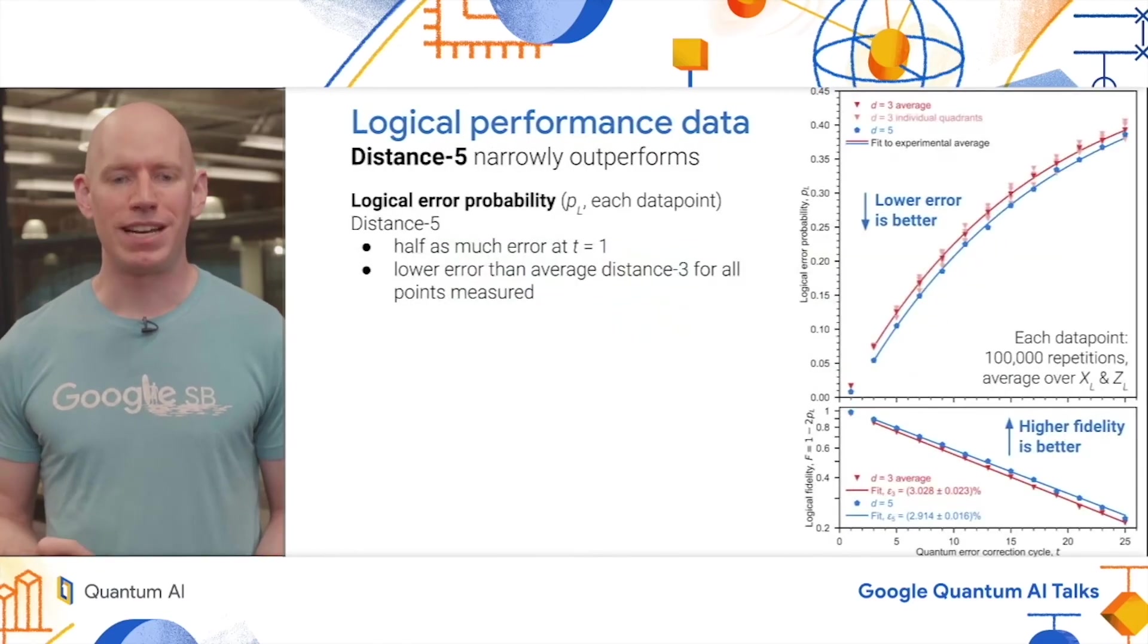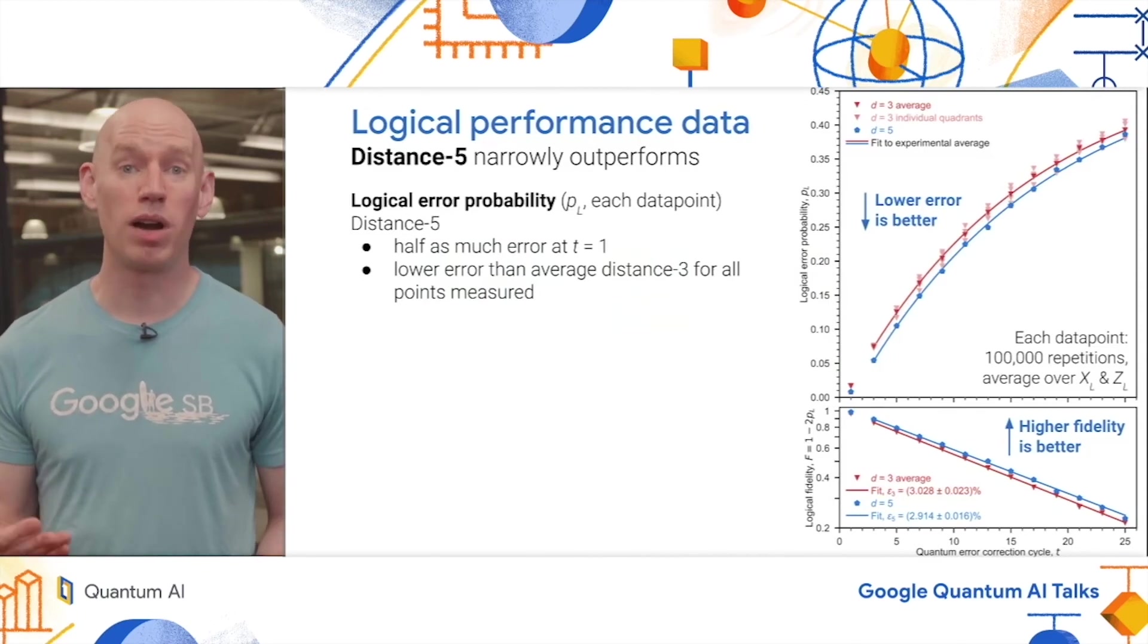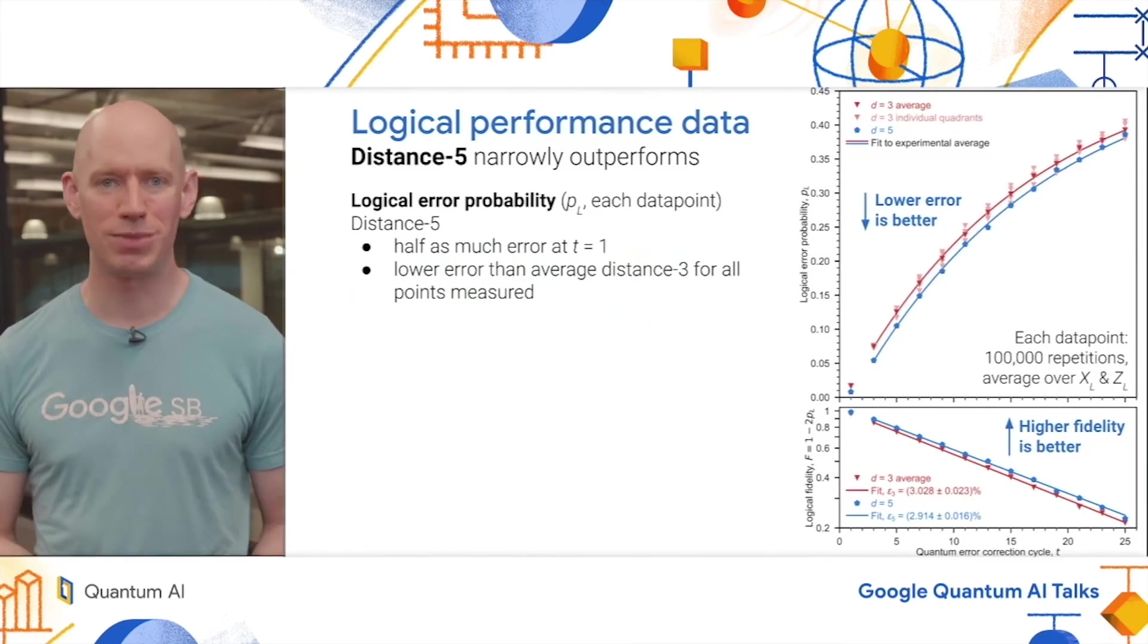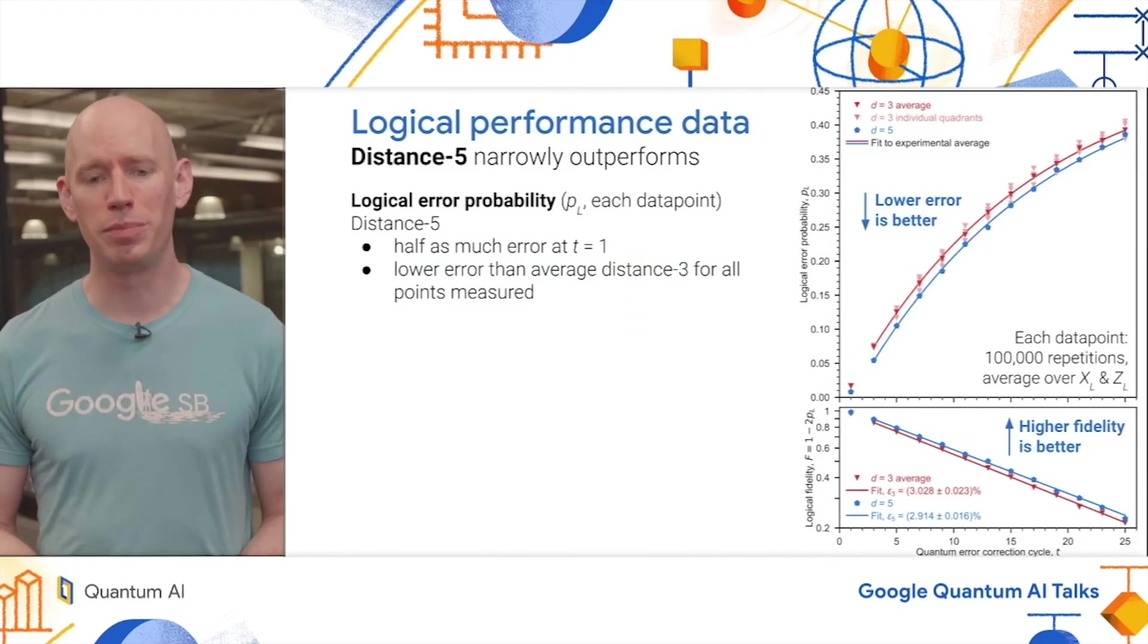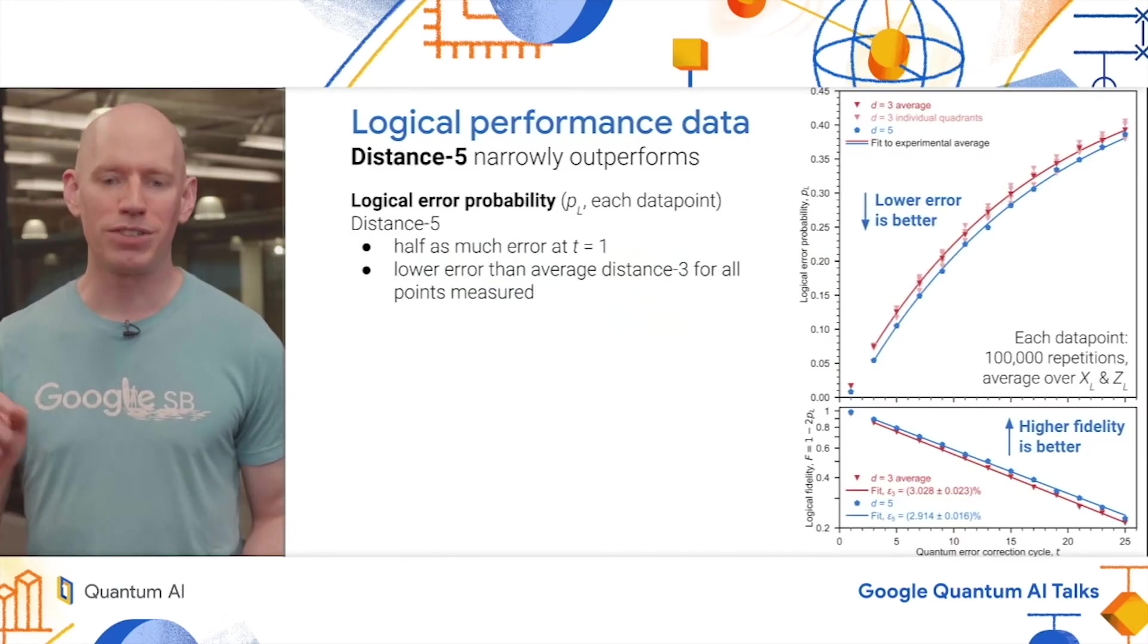Now we can move on to the logical performance data. We're pleased to see that distance five narrowly outperforms distance three. Let's look at the data in closer detail. We have two panels showing the same data. The top panel is showing the logical error probability, the probability that you get the wrong answer. This would start near zero and decay up to 0.5, a 50-50 coin flip. The lower panel is the logical fidelity, one minus two times the logical error probability, which starts at one and decays exponentially to zero. In a semi-log plot like what we have here, you expect to see a line as we do. In terms of the logical error probability, we can look first at the time equals one point and observe that the distance five code has about half the error of all the distance three codes. It also has lower error probability than the average of the distance three codes for all the times that we measured from one to 25. Though you will observe that there are a couple of times when an individual code does have lower error than the distance five.